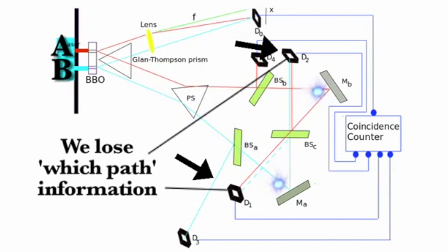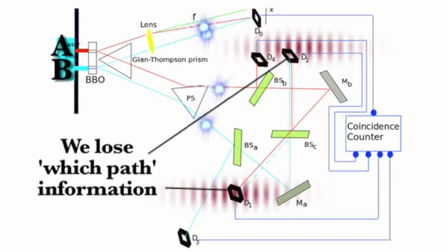Because if it hits D one or D two, it could either have come from A or B. We can't ever trace the path information back to A or B. So when they hit D one or D two, we should get an interference pattern, demonstrating the photon went through both slits, since we don't have definite path information.